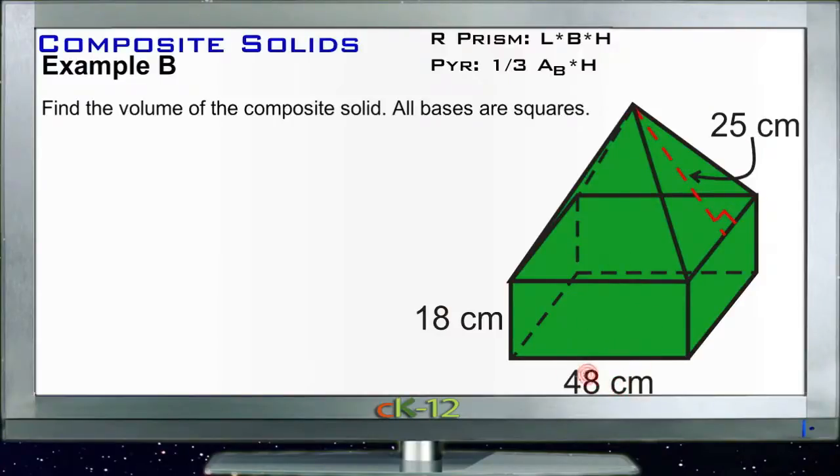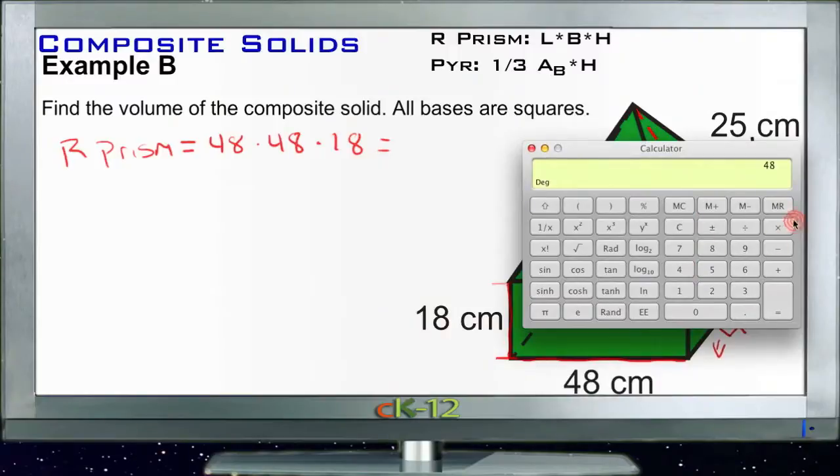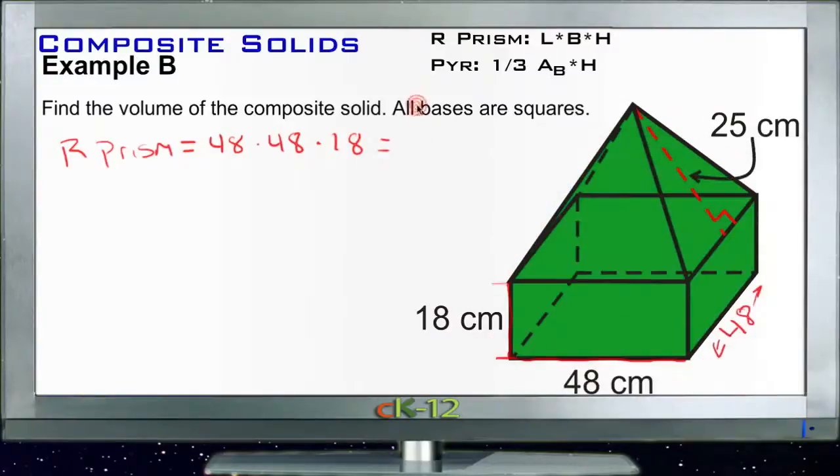So first let's find the area of that prism. It's just going to be length times width times height, right? So we have 48 this way, and it said the base is a square, so it's also going to be 48 the other way. And then it's 18 tall. So it's 18 from here to here. So our rectangular prism is going to be 48 times 48 times 18, or, get a calculator out, 48 times 48 times 18, so 41,472, 41,472 cubic centimeters.